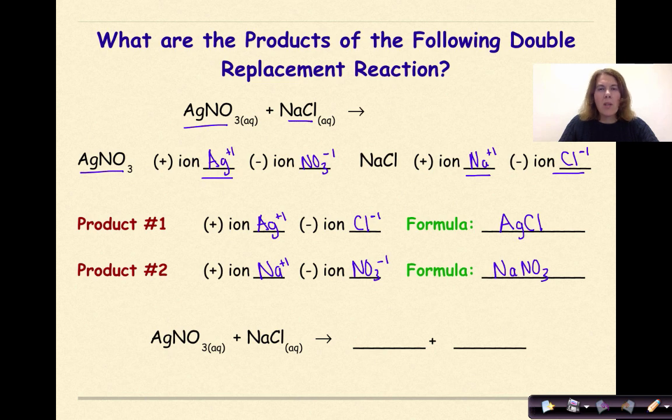So our final equation will be AgNO3 plus NaCl will give us AgCl and NaNO3. And then the final thing that we need to do is just to check to make sure that it doesn't need to be balanced. And if we look at everything here we see that it is already balanced.